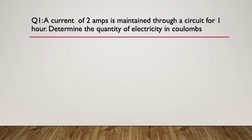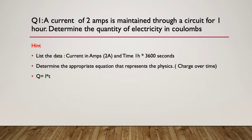So our first question is question one. A current of two amps is maintained through a circuit for one hour. Determine the quantity of electricity in coulombs. So you pause here. So now continuing, our hint is list the data that you have available. We know we have a current of two amps and a time of one hour, which is 3600 seconds. Remember we work in SI units. So determine the appropriate equation that actually represents the physics, that is charge of electricity over time. And that formula is Q equals I times T. So pause here if you need to.